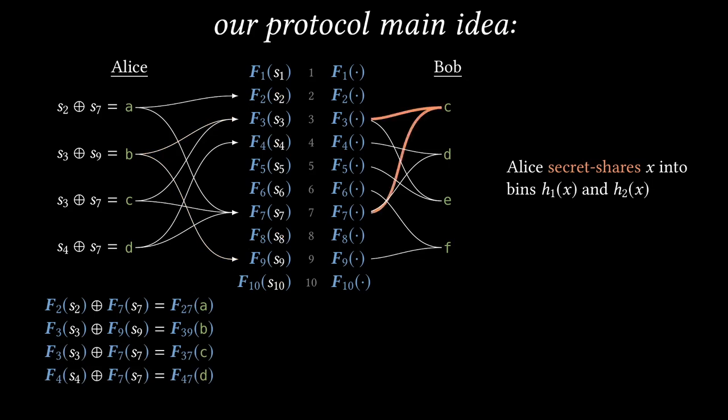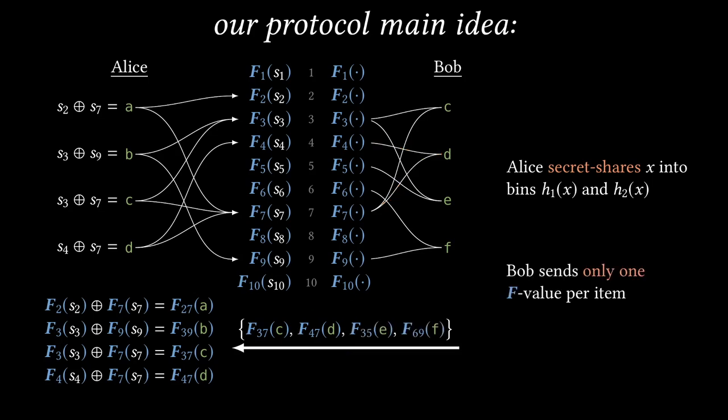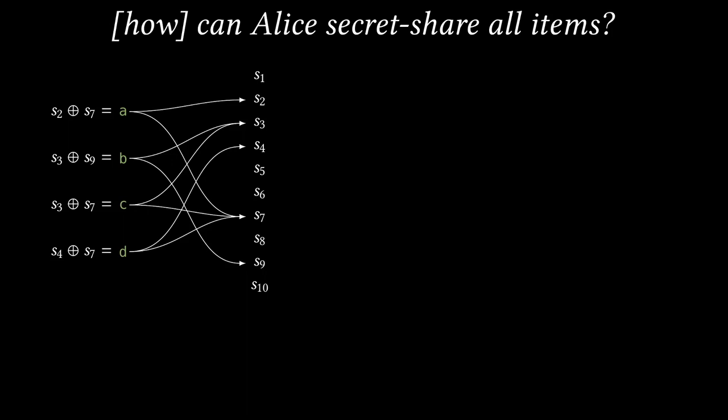Now suppose Bob has item C, which is associated with bins 3 and 7. Recall that Bob can compute the function F3⊕7 on any input. So he simply computes F3⊕7(C) and sends it to Alice. Similarly, he has item D, which is associated with bins 4 and 7, so he can send F4⊕7(D) to Alice. And the important thing here is that Bob sends only one F output per item. It's because of this fact that we avoid the attack that I mentioned before. For every item, there's only one F output for Bob to send. He either sends it or he doesn't. He can't halfway send it like in the previous example, so it's much easier to simulate. Of course, Alice can identify the intersection by seeing which of these PRF outputs she recognizes. The other PRF outputs look random to her.